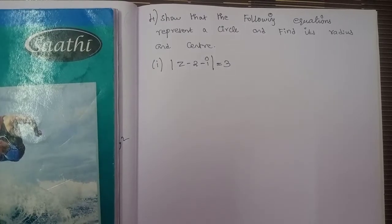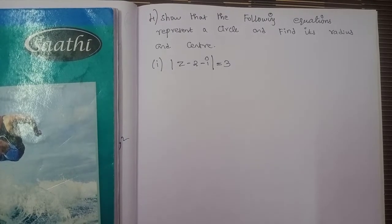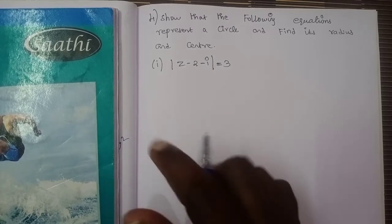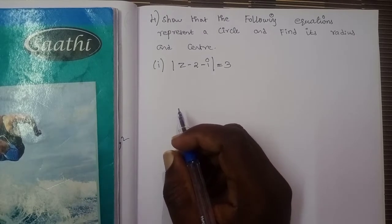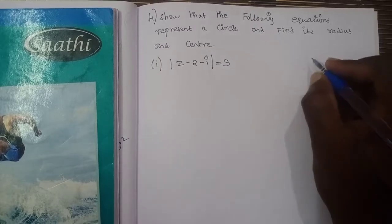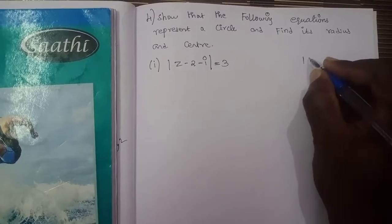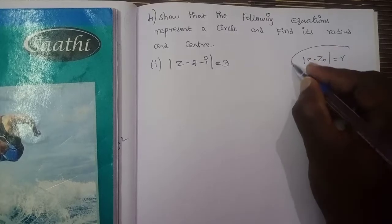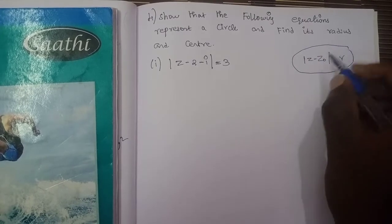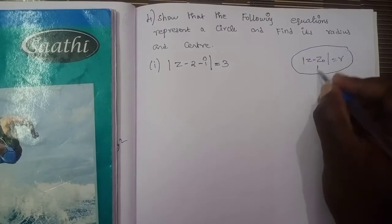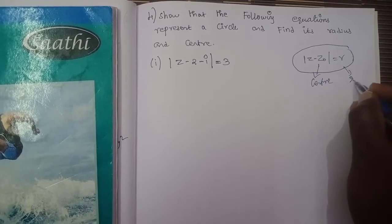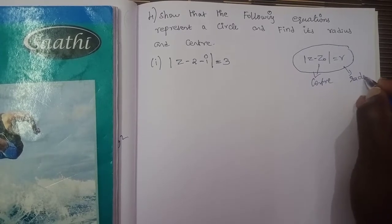Show that the following equations represent a circle and find its radius and center. The circle equation is: modulus of z minus z₀ is equal to r, where z₀ represents the center and r represents the radius.